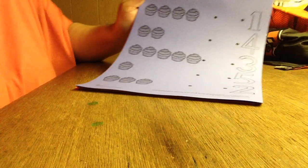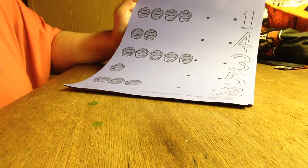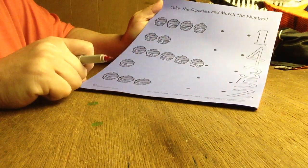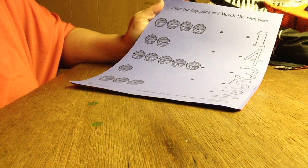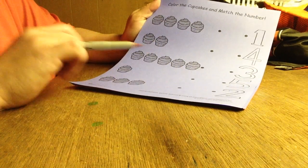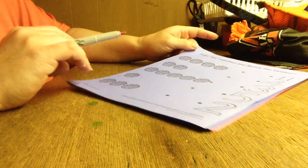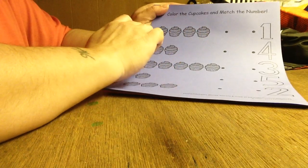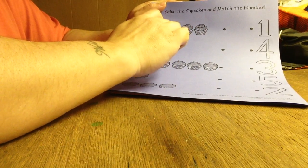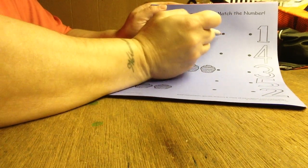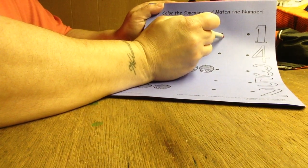We have 1 through 5, and then we have the cupcakes. I want you to draw a line to the cupcakes to their matching number, so we're going to have to count. Okay, so with this, our top row has one, two, three, four. So we have four cupcakes. You're going to take that line and connect it to the number four. Correct, there you go.